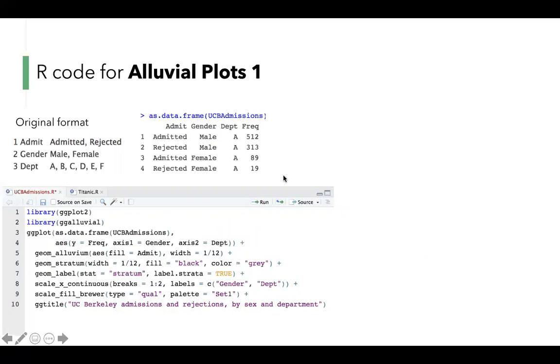This column shows number of units. Then, we create a ggplot first and set the y-axis as frequency, and there are two x-axes: gender and department.